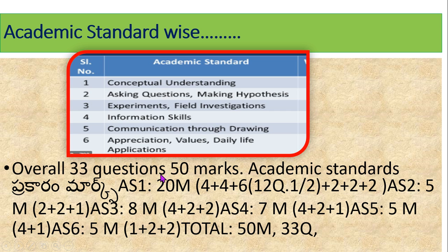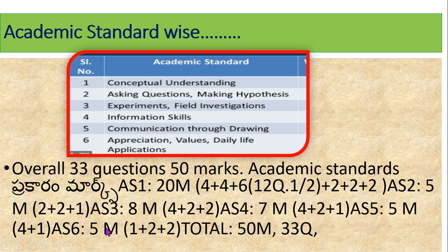Total 33 questions, 50 marks. Biological science 50, physical science 50. AS1 — Conceptual understanding: 20 marks, 12 questions at half mark each = 6 marks. AS2 — Asking questions and making hypothesis: 5 marks. AS3 — Experiments and field investigations: 8 marks. AS4 — Information skills: 7 marks. AS5 — Communication through drawing: 5 marks. AS6 — Appreciation, values, and daily life applications: 5 marks. Total: 50 marks.